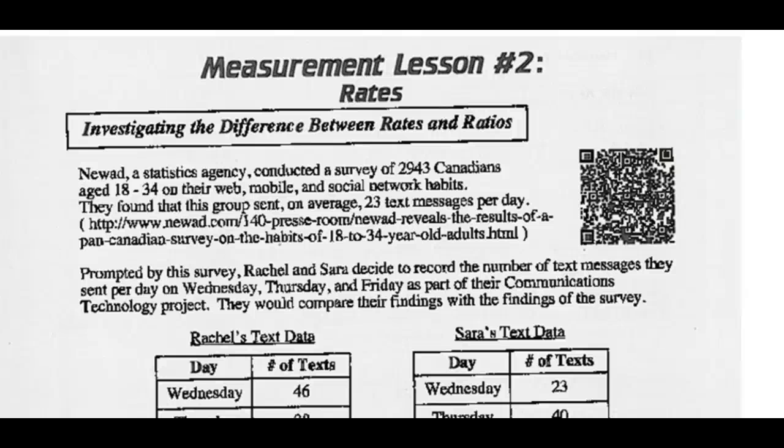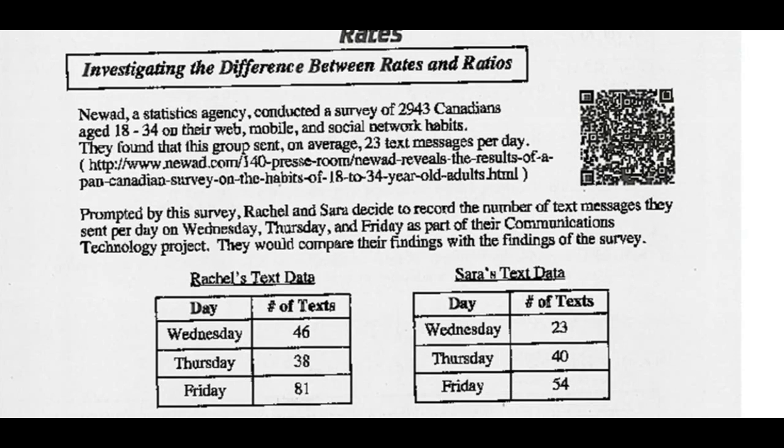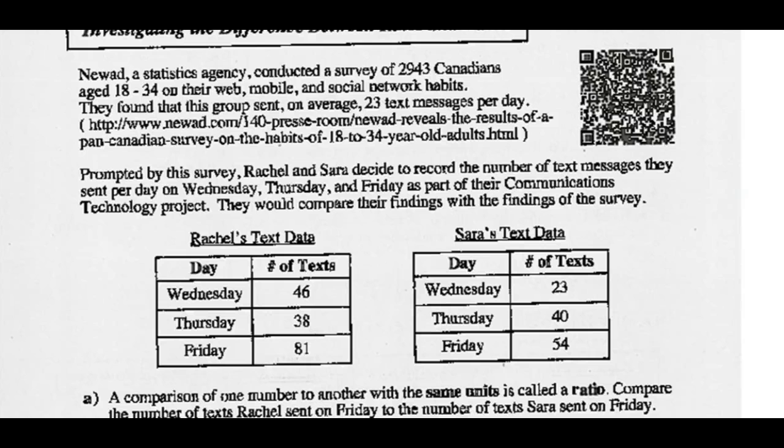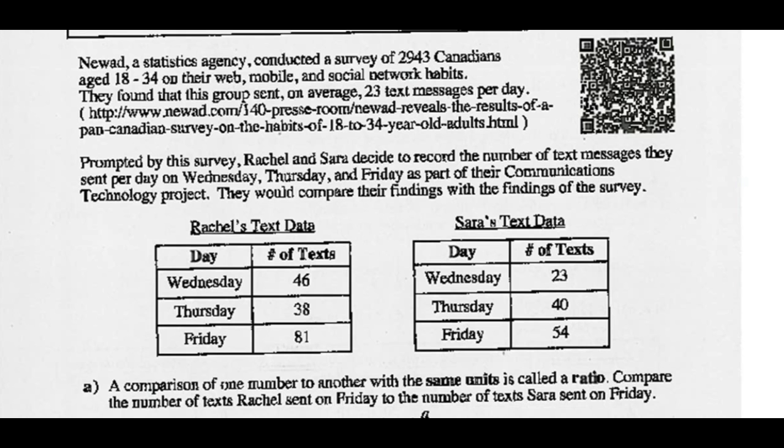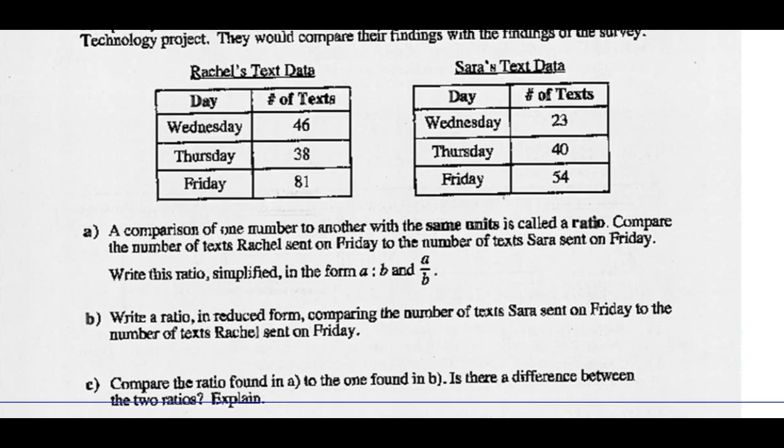Hey, Math 20-2. Today we're going to look at rates. First off, let's investigate the difference between rates and ratios. New Ad, a stats agency, conducted a survey of 2,943 Canadians between the ages of 18 and 34 on their web, mobile, and social network habits. They found that this group sent, on average, 23 texts per day. Prompted by the survey, Rachel and Sarah decided to record the number of text messages they sent per day on Wednesday, Thursday, and Friday as part of their ComTech project. They would compare their findings with the findings of the survey.